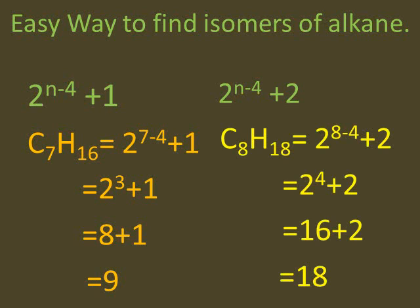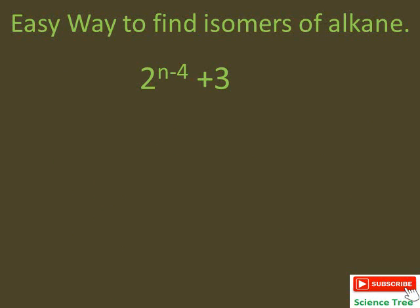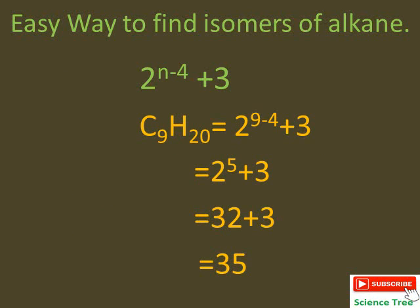For octane, we do not use plus 1 — we use plus 2. Putting n=8: 8 minus 4 is 4, and 2^4 = 16, plus 2 gives 18 — so octane has 18 isomers. For nonane with 9 carbon atoms: 9 minus 4 is 5, and 2^5 = 32. Here we use plus 3, so 32 plus 3 gives 35 — nonane has 35 isomers.